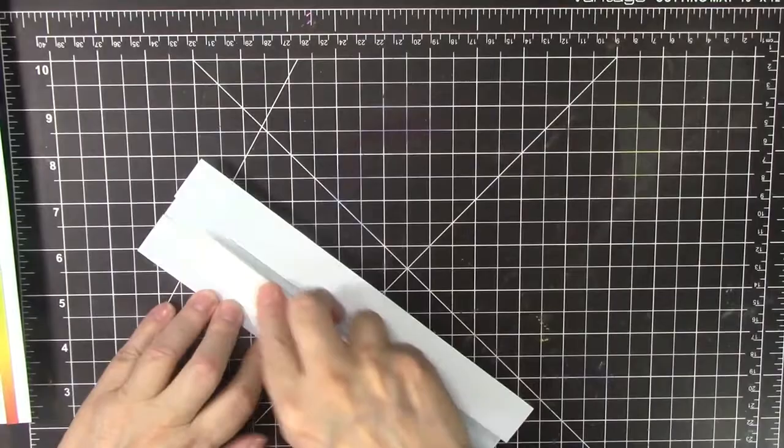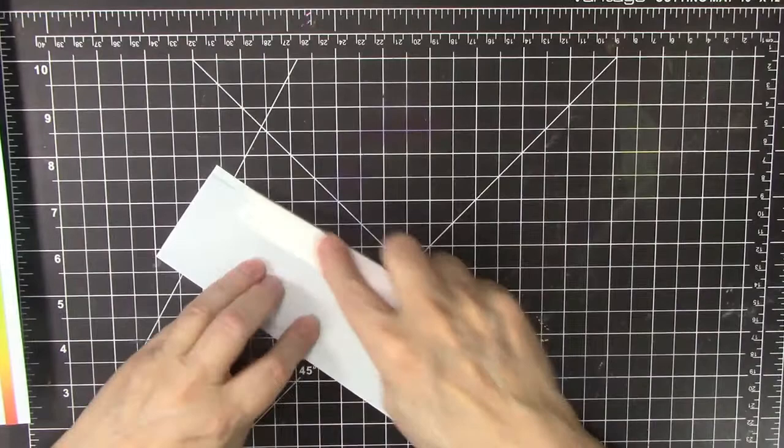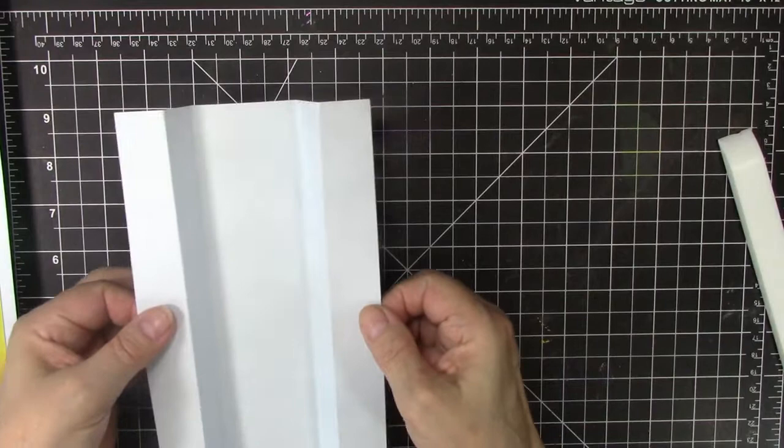And then we're going to fold on those lines up in the center and down on the outside ones. I'm using a good Teflon bone folder here. It's my favorite and I use it all the time. And that's your card base for the rainbow bridge.